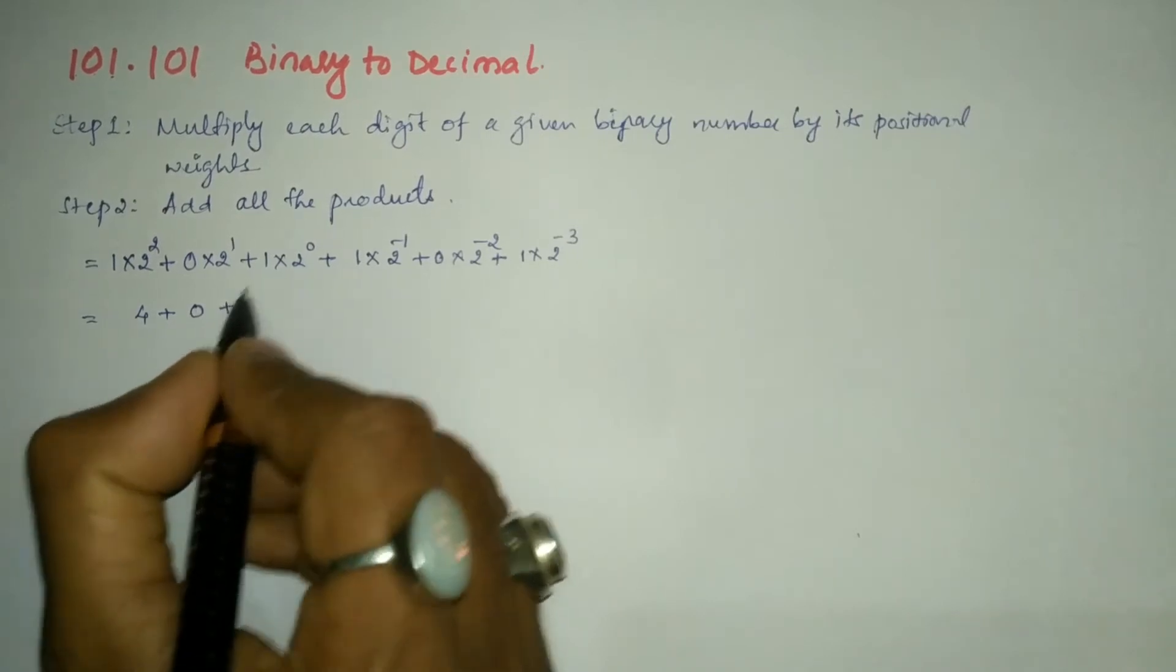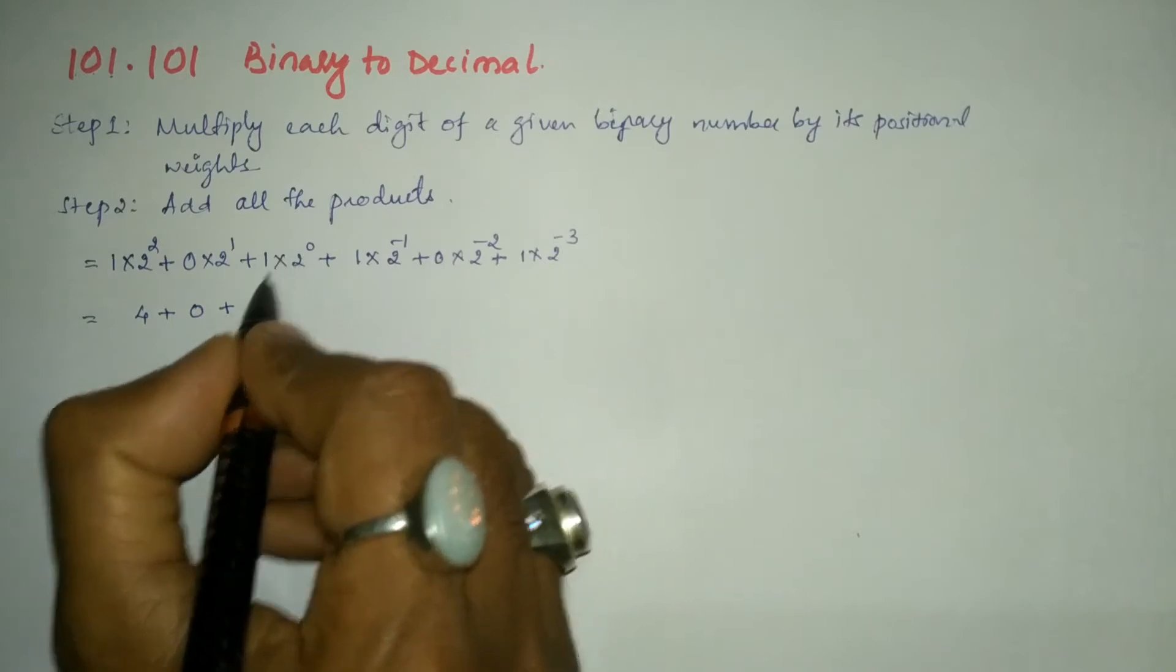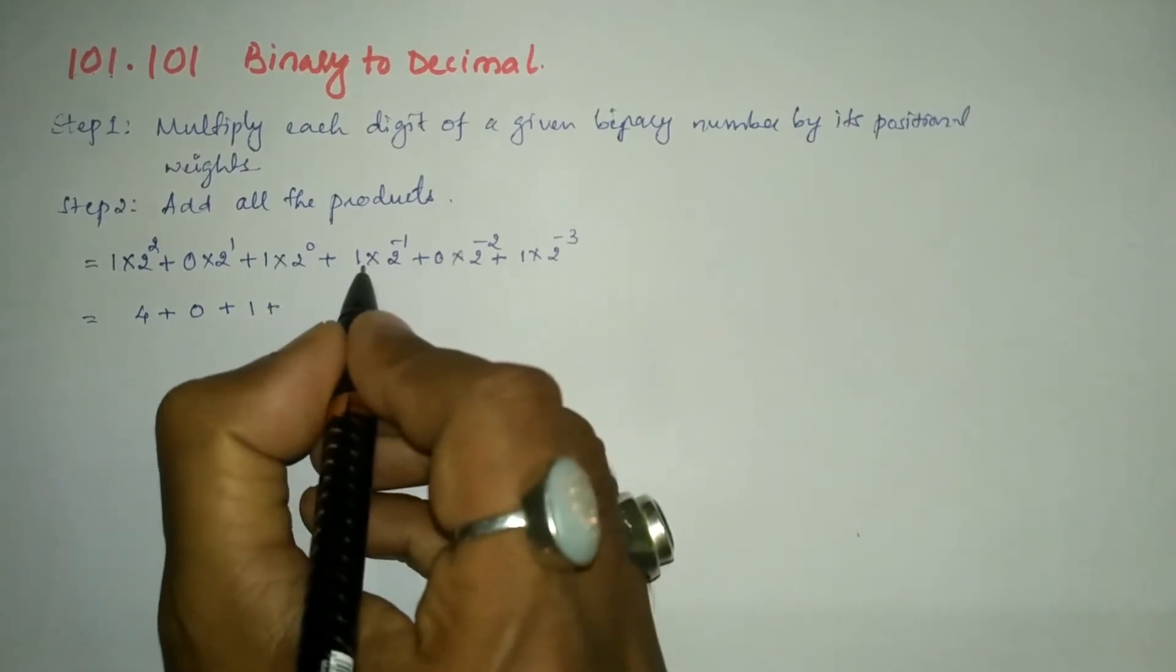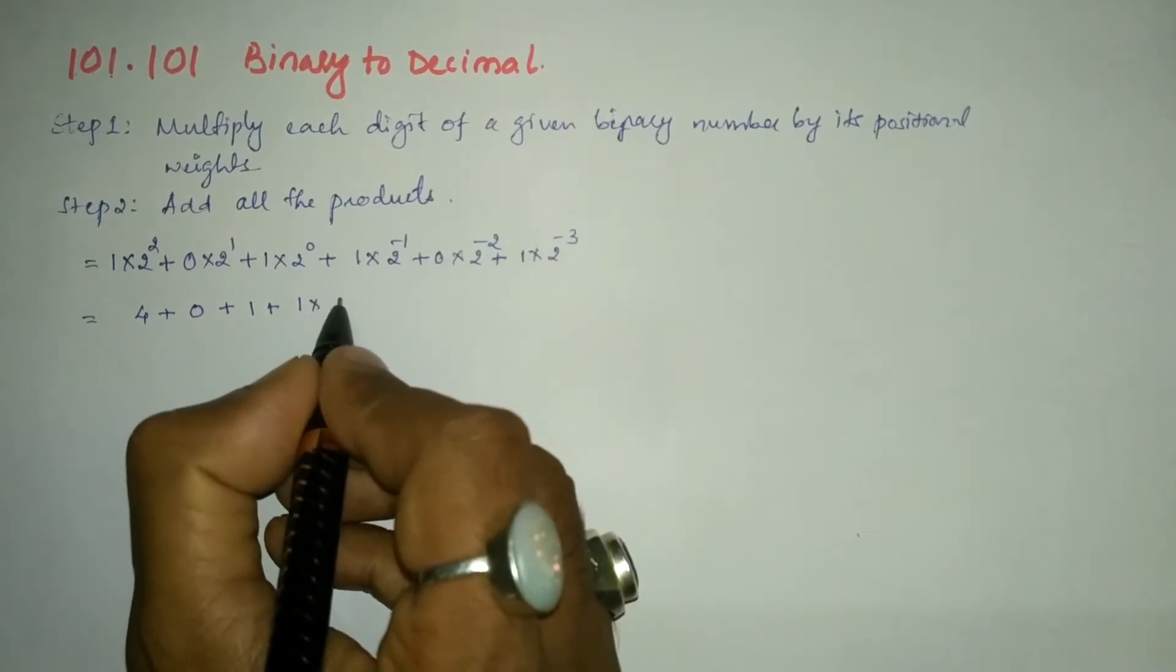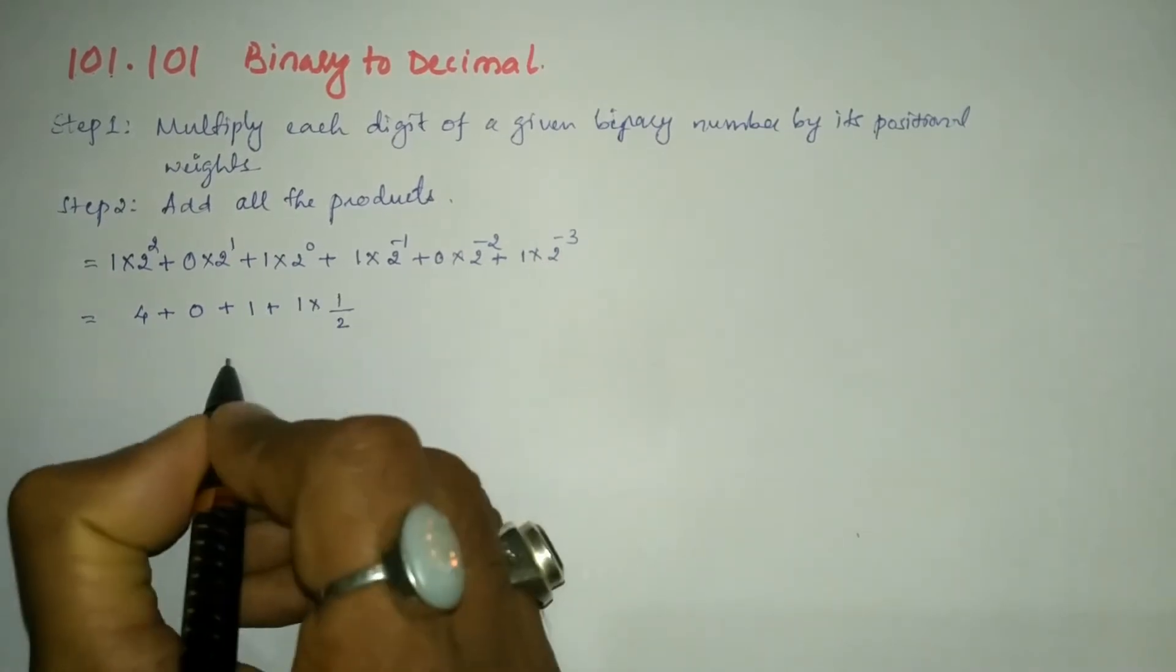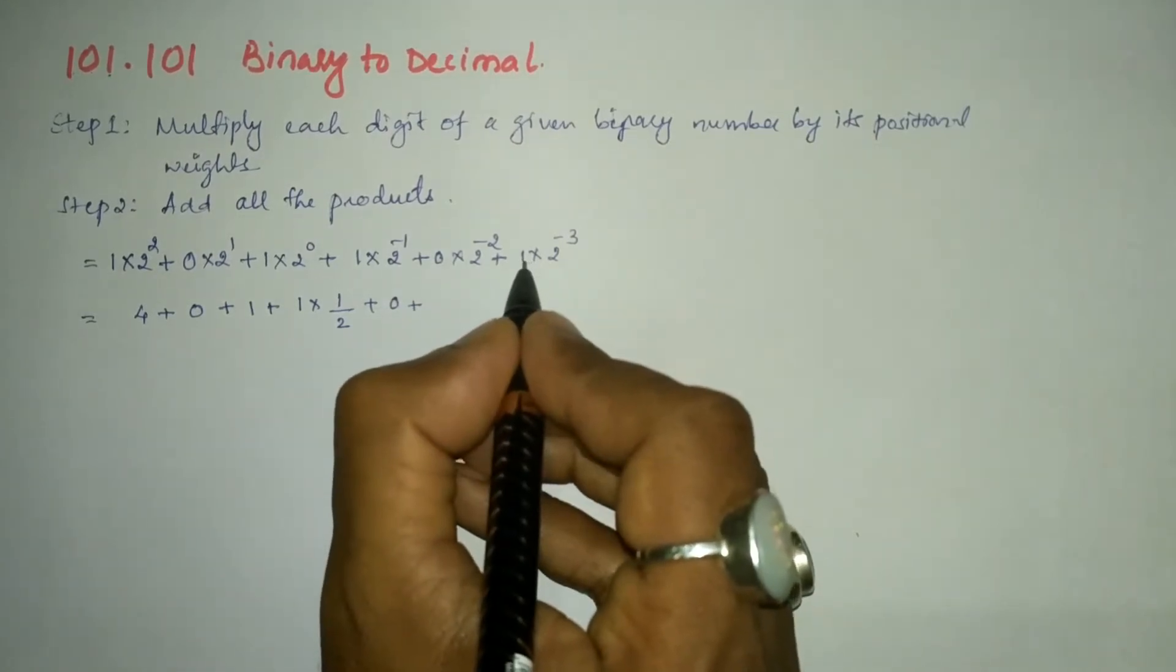Plus 0×anything will become 0. Next, as 2⁰ is 1, anything raised to 0 will become 1, so 1×1 is 1. Plus 1×2⁻¹ can be written as 1/2.